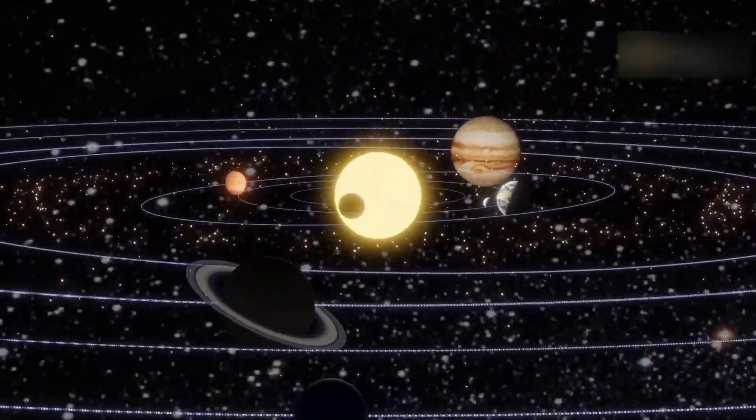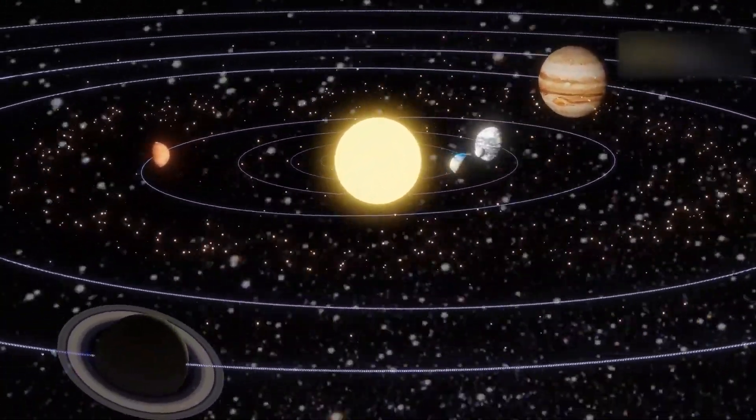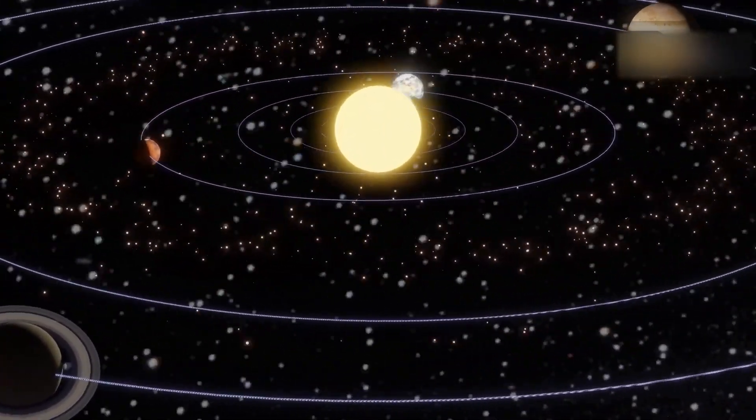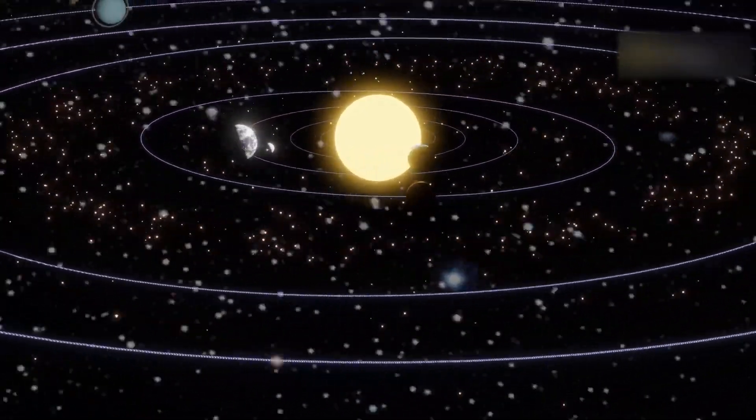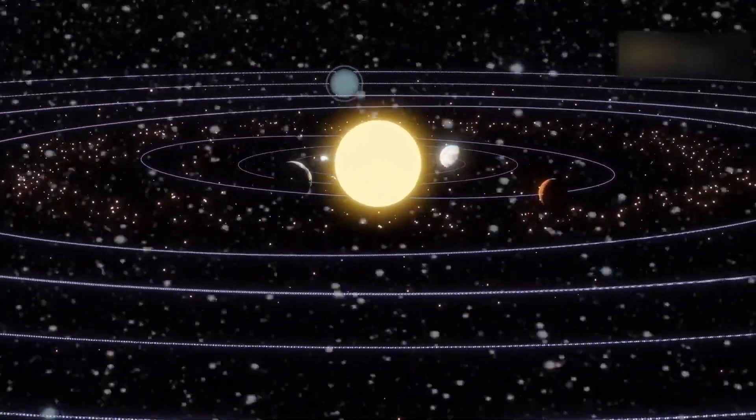Astronomers call it a planet parade, though unlike the Macy's version, you'll need a telescope to spot some of the more elusive floats. This rare planetary parade will be visible in the eastern sky before sunrise for a few days, offering a great opportunity for sky watchers.